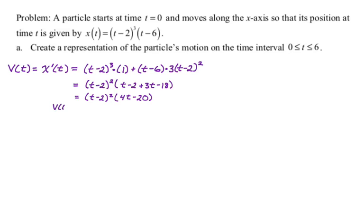I'm going to take a four out and kind of rearrange. So we get four times the quantity (t minus 5) times the quantity (t minus 2) squared. All right. So that's our velocity.